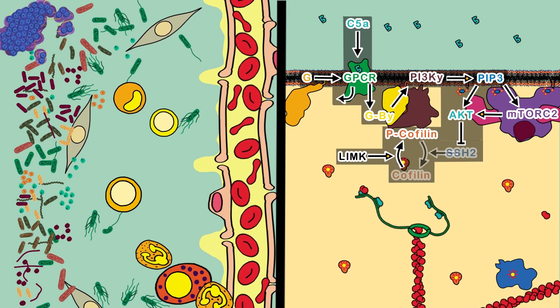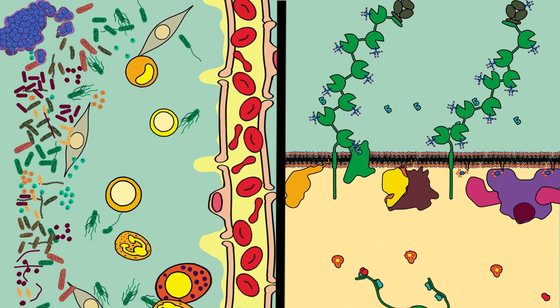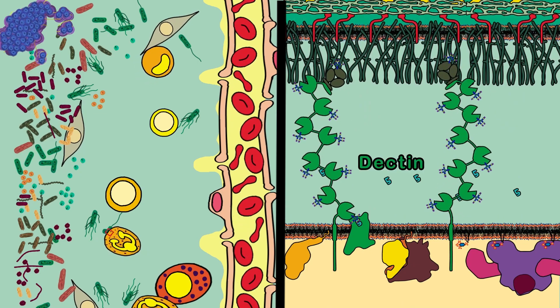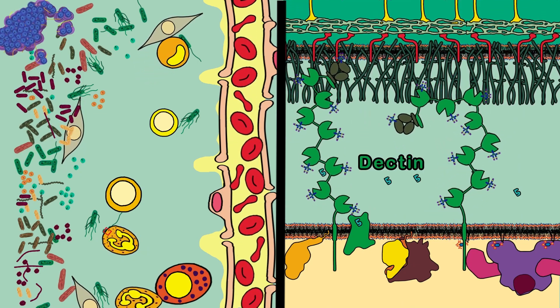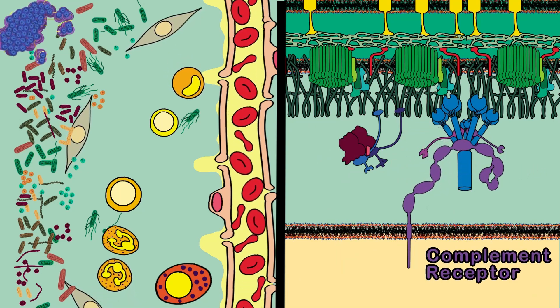When the phagocytes stumble into bacteria, they capture them using membrane proteins that stick to the pathogen molecules. If bacteria have complement components on their membrane, they are even easier to capture by special receptors that bind to them.